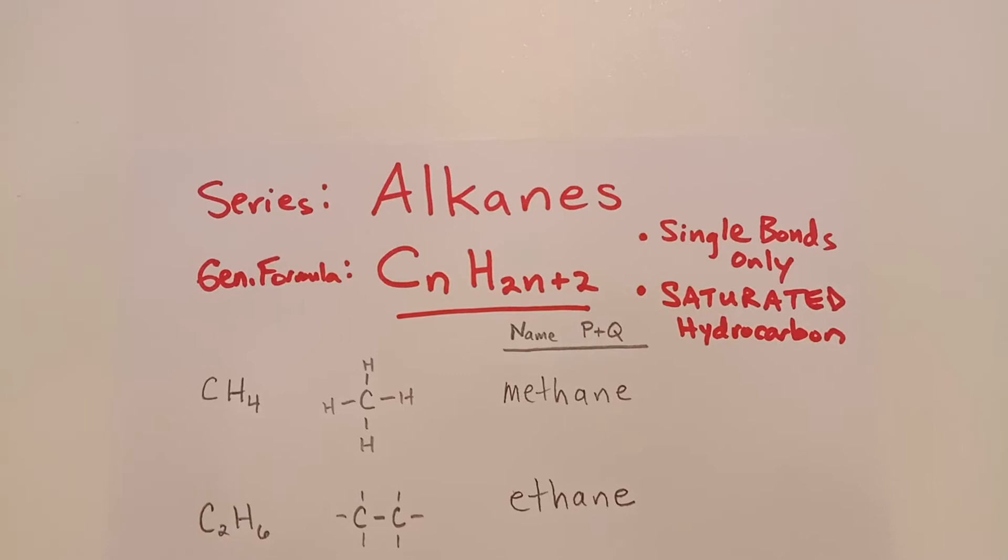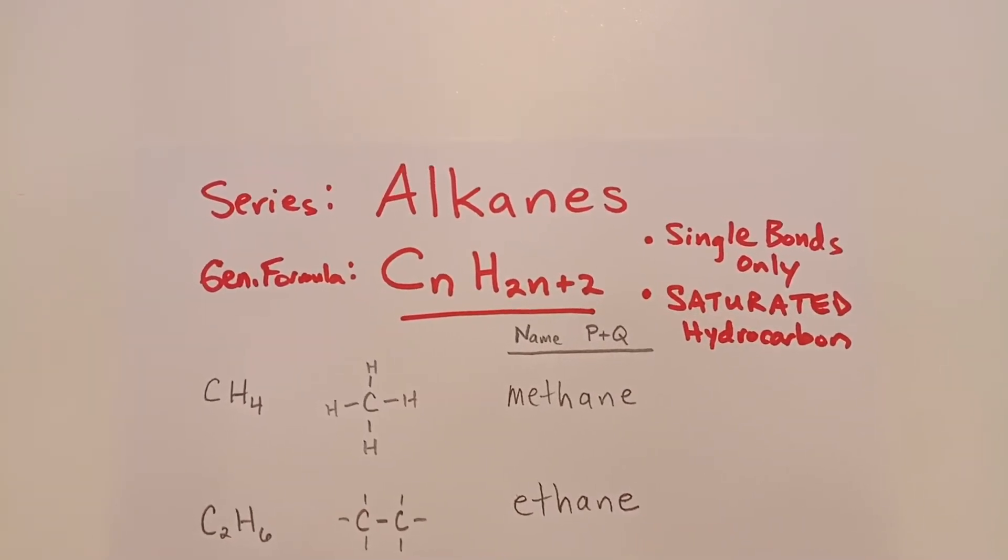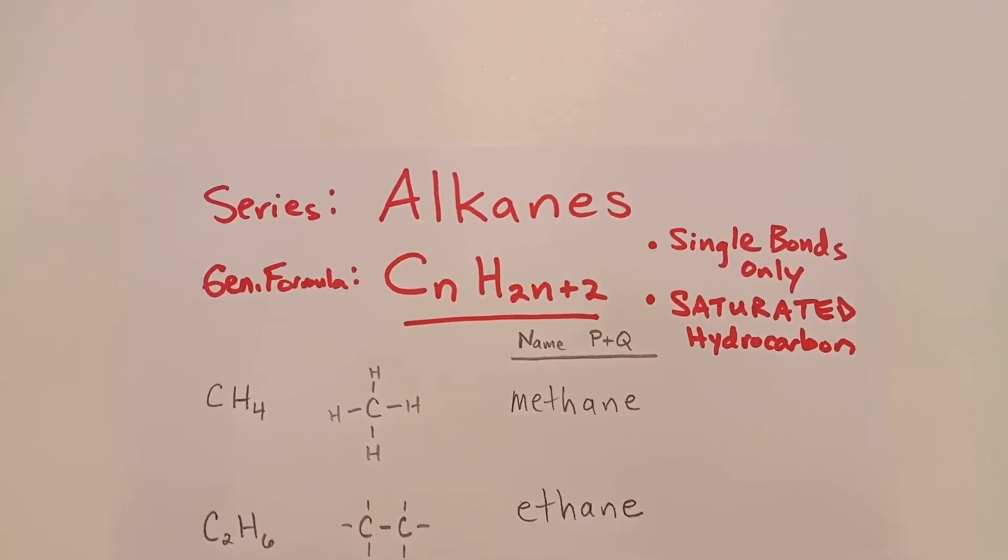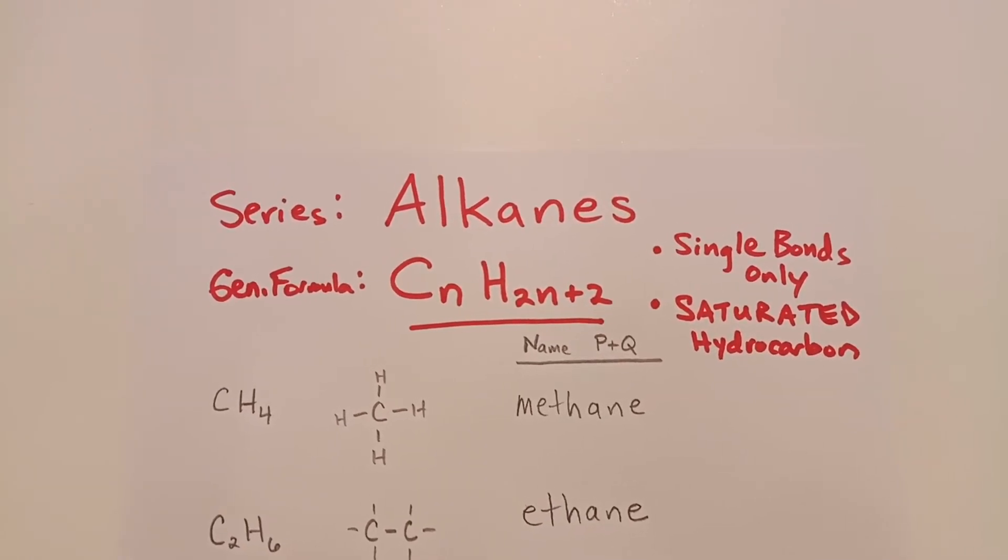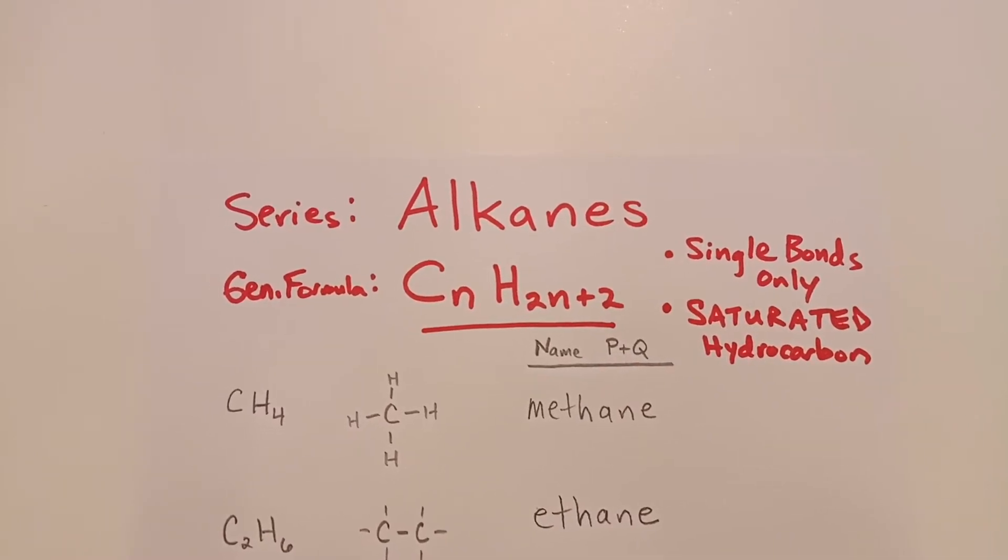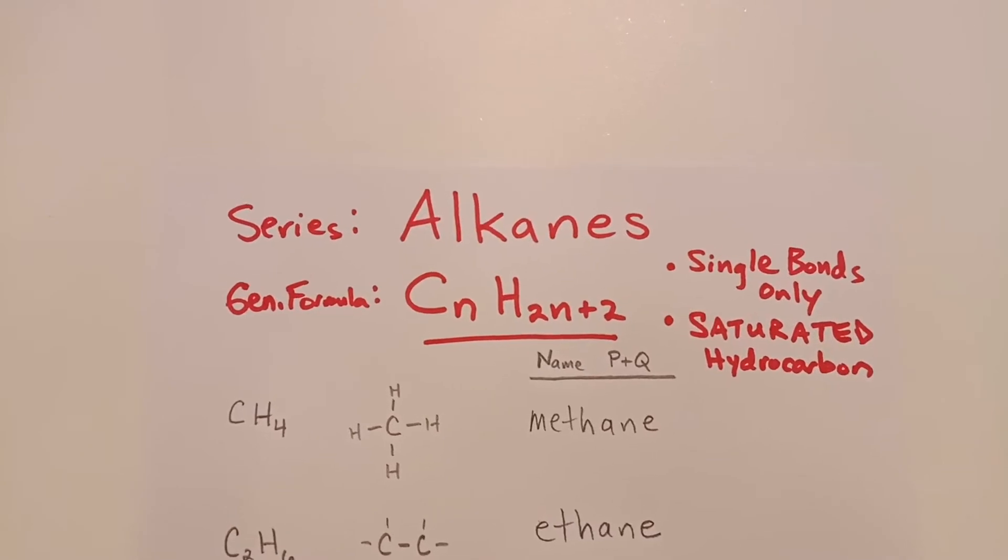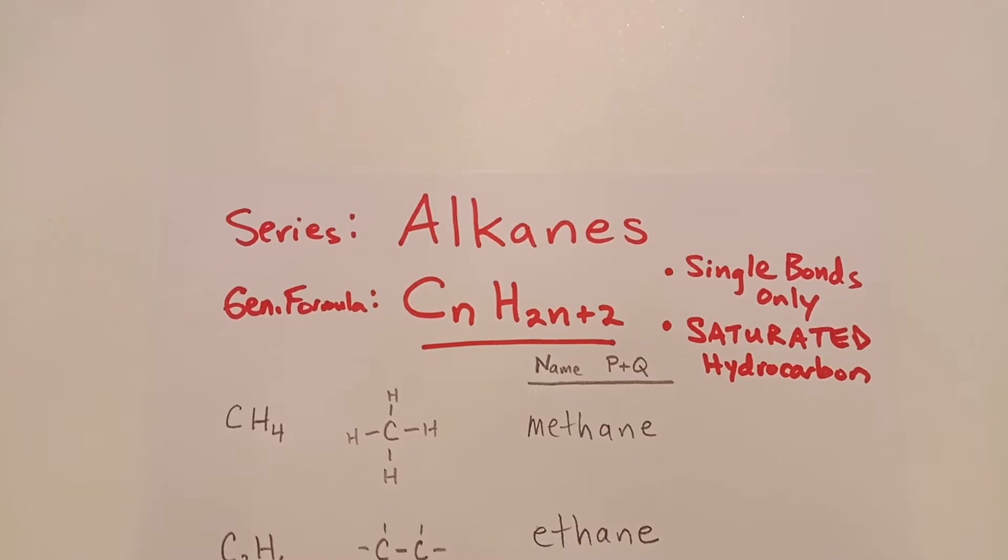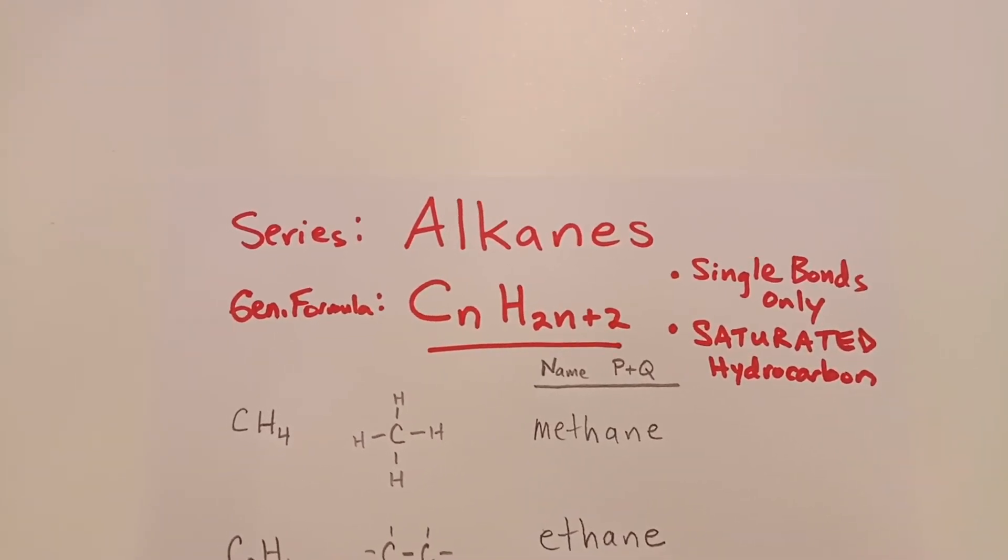Let's talk about the alkanes. The alkanes are a homologous series, a family of hydrocarbons. They have the general formula CnH2n+2. That means the hydrogens are going to be twice the number of carbon atoms plus two more. These families of hydrocarbon compounds have single bonds only, and they're also known as saturated hydrocarbons. They have all the hydrogen atoms you can get in there.